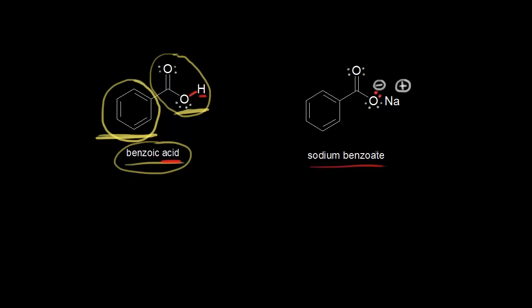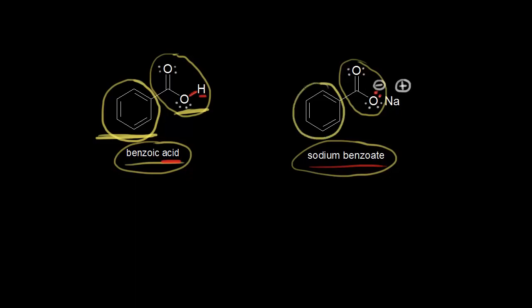Without going too deep into acid-base chemistry, we took the most acidic proton off benzoic acid to give us the conjugate base, sodium benzoate. Sodium benzoate is highly soluble in room temperature water. This means we increased the hydrophilic portion because now we have a negative charge, which is better able to interact with water. So the hydrophilic portion now overcomes the hydrophobic portion, and sodium benzoate is soluble.